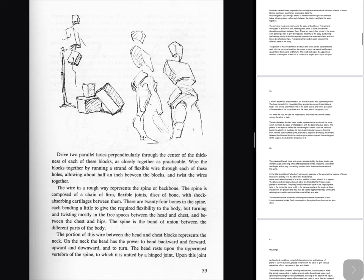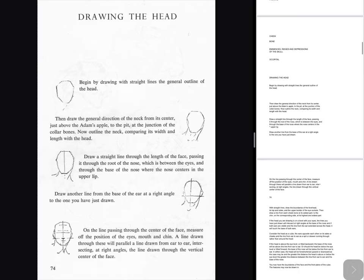Drawing the head: Begin by drawing with straight lines the general outline of the head, then draw the general direction of the neck from its center, just above the Adam's apple, to the pit at the junction of the collarbones. Now outline the neck, comparing its width and length with the head. Draw a straight line through the length of the face, passing it through the root of the nose, which is between the eyes, and through the base of the nose where the nose centers in the upper lip. Draw another line from the base of the ear at a right angle to the one you have just drawn, on the line passing through the center of the face. Measure off the position of the eyes, mouth and chin. A line drawn through these will parallel a line drawn from ear to ear, intersecting at right angles the line drawn through the vertical center of the face. With straight lines, draw the boundaries of the forehead, its top and sides, and the upper border of the eye sockets. Then draw a line from each cheekbone at its widest part, to the chin, on the corresponding side, at its highest and widest part. If the head you are drawing is on level with your eyes, the lines you have just drawn will intersect at right angles at the base of the nose.